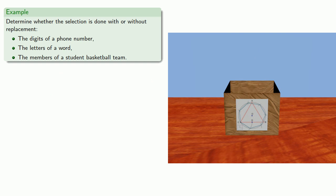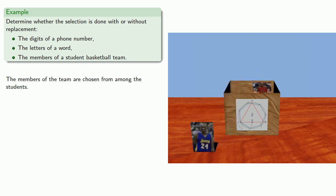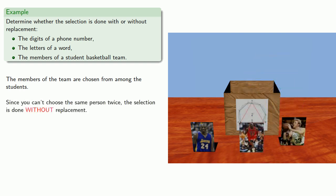The members of the team are chosen from among the students. Now, in this case, since you can't choose the same person twice, the selection is done without replacement.